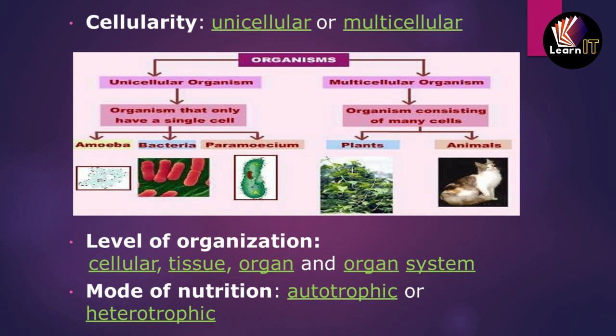Unicellular organisms are organisms that have only a single cell. Examples include amoeba, bacteria, and paramecium — these come under unicellular or single-celled organisms. Multicellular organisms consist of many cells or different kinds of cells, as in the case of plants and animals.